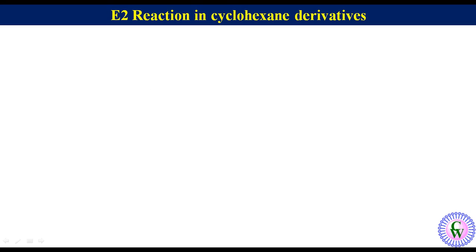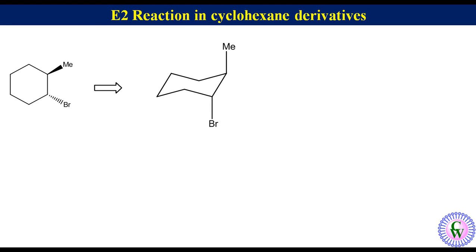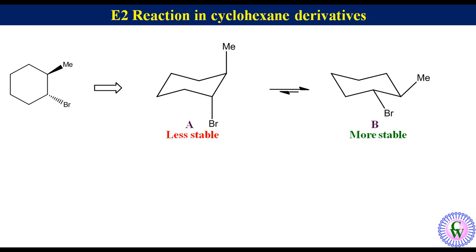Now let's discuss E2 reaction in 1,2-disubstituted cyclohexane. Suppose we have to predict the structure of the E2 product of trans-1-bromo-2-methylcyclohexane. One chair conformation, labeled A, can be drawn with bromine and methyl groups at axial positions. The other conformation, labeled B, has bromine and methyl groups at equatorial positions. Conformation A is less stable than B due to 1,3-diaxial interactions.